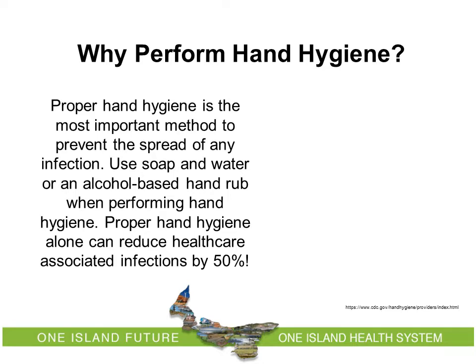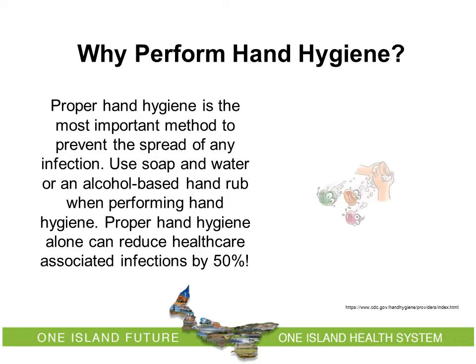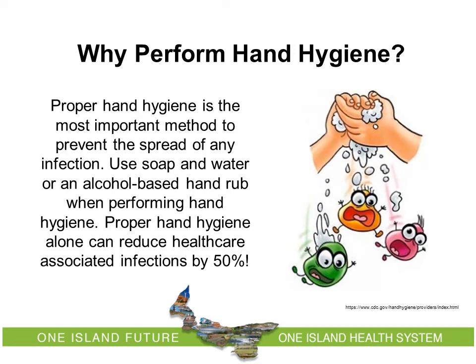Why do we perform hand hygiene? Proper hand hygiene is the most important method to prevent the spread of any infection. Use soap and water or an alcohol-based hand rub when performing hand hygiene. Proper hand hygiene alone can reduce healthcare-associated infections by 50%.